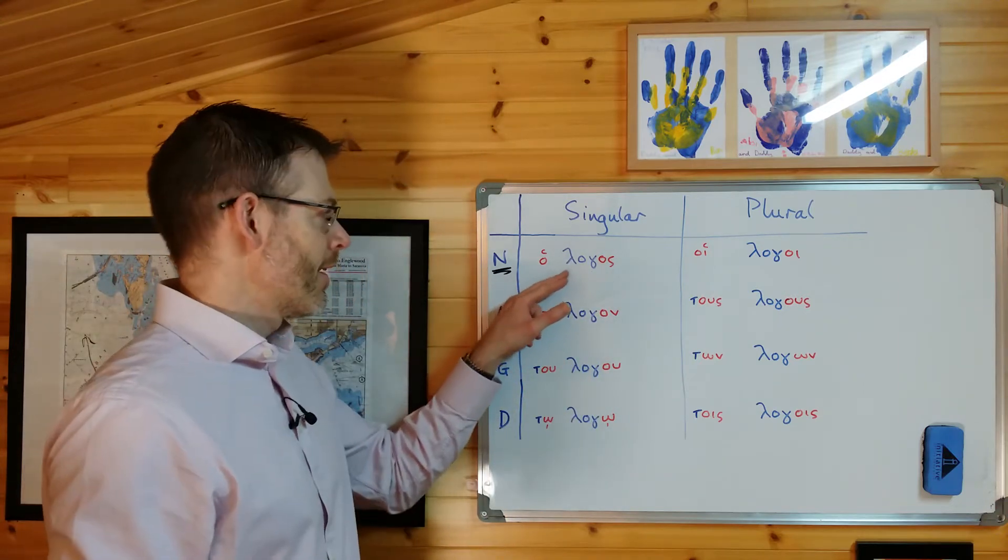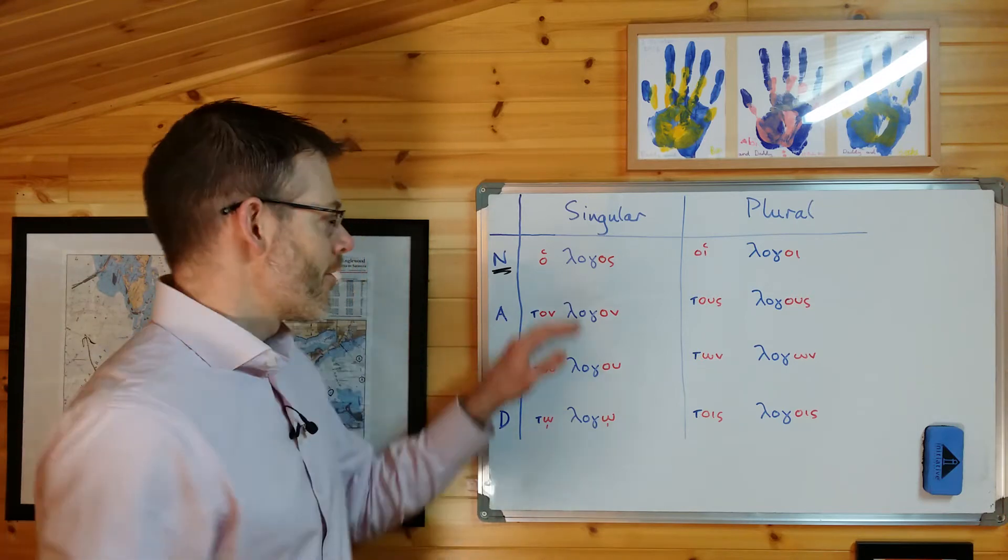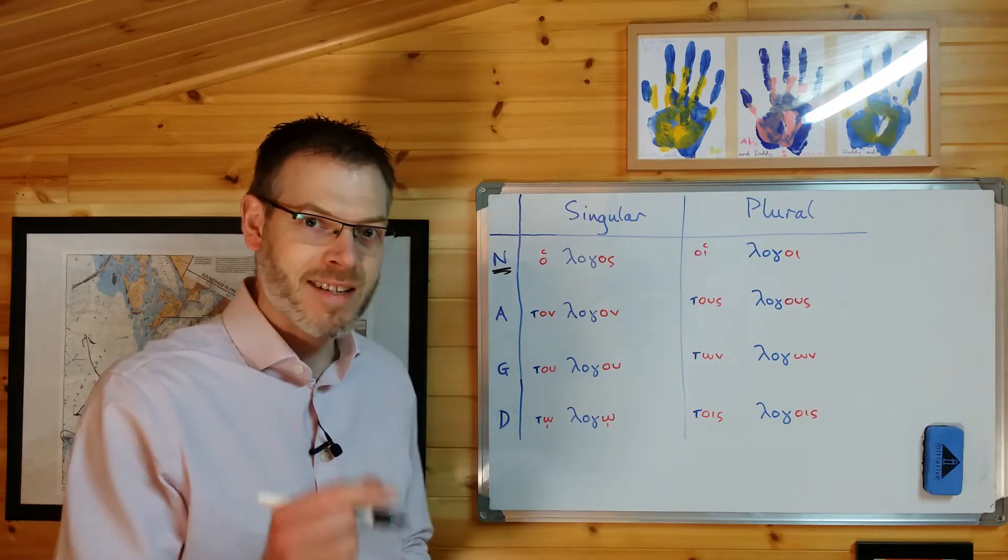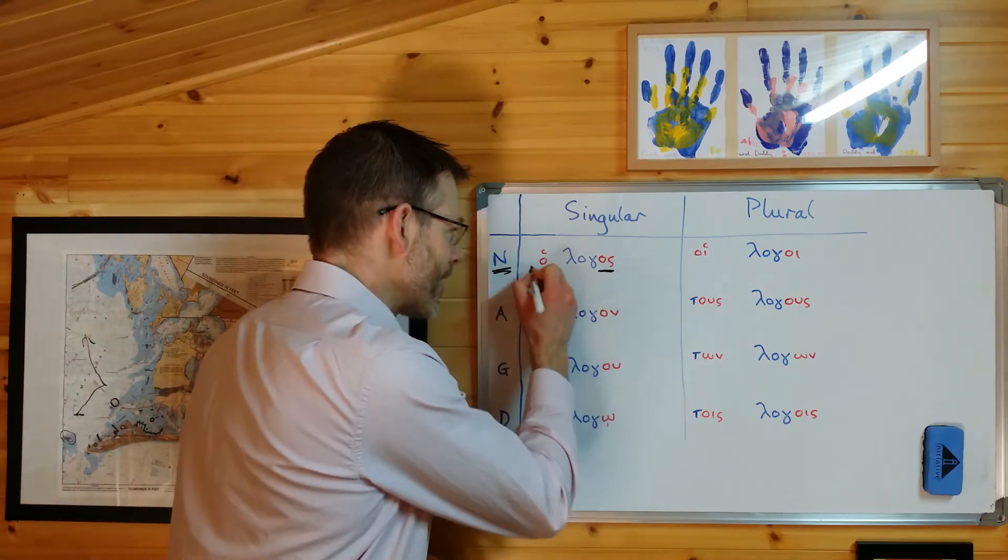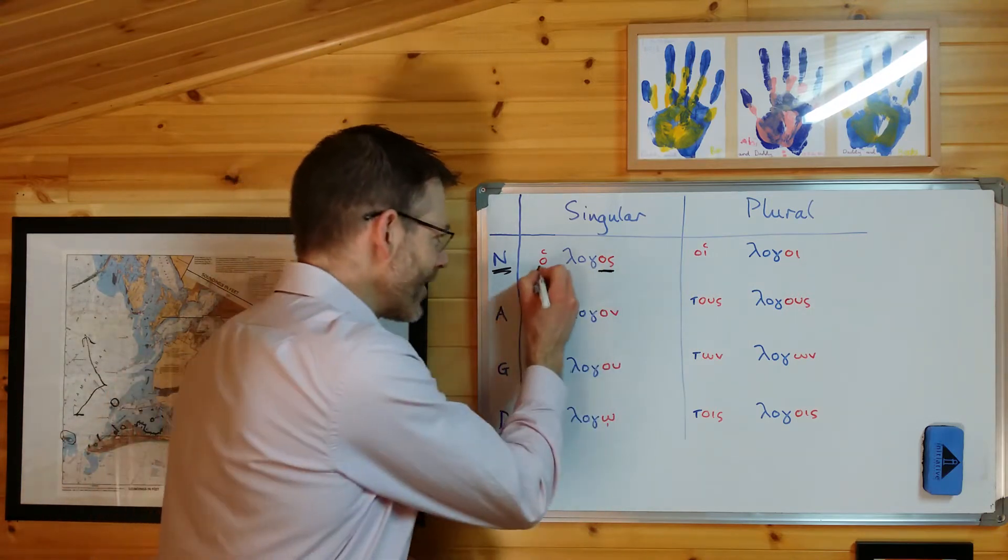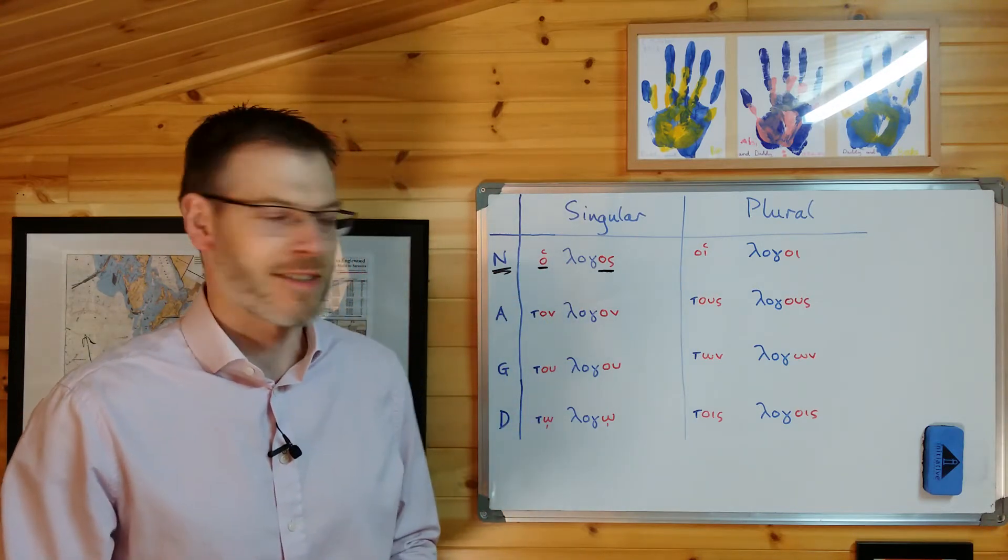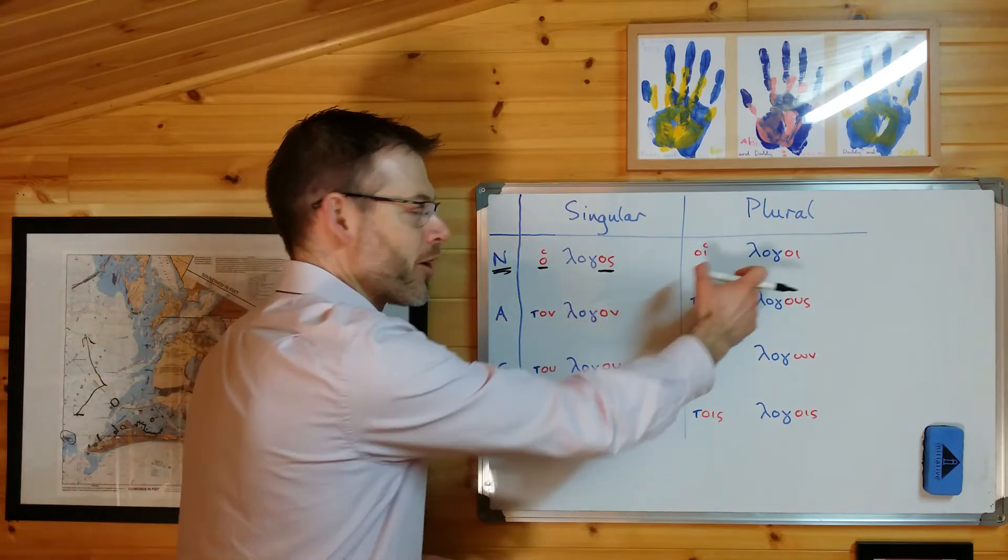Ho the, and logos word, the word, wherever that comes in the sentence, you know that's the subject of the sentence because it has this little label, the nominative case ending and the nominative form of the article attached to it to tell you it's the subject of the sentence. You get the same thing in the plural, the words.